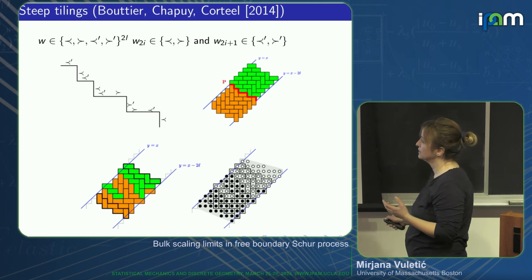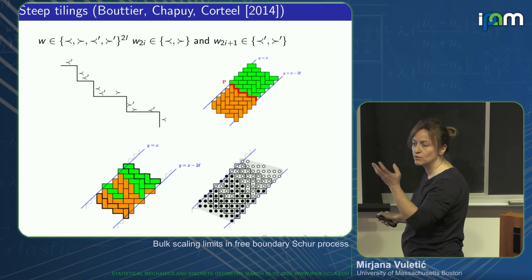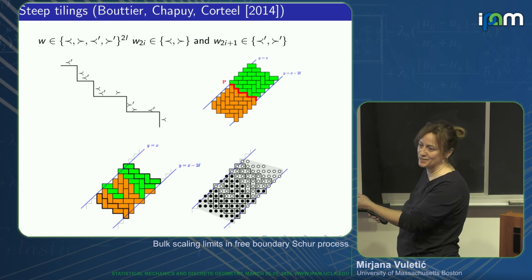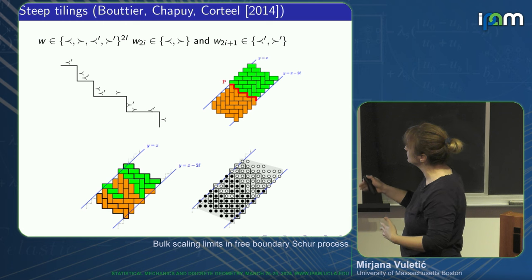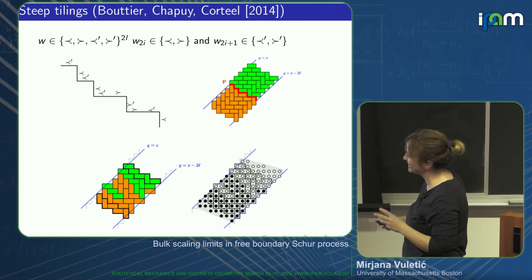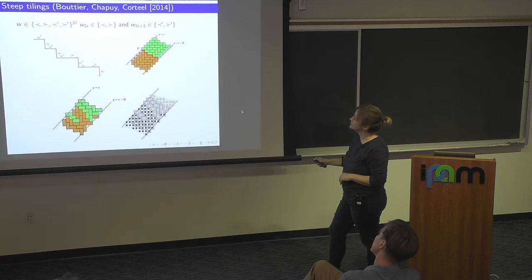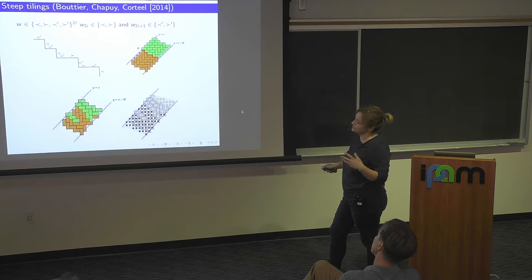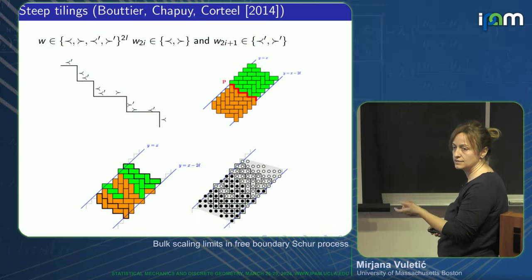When we have a boundary defined by the word, we can construct shapes like what Thomas showed — a herringbone pattern. For the Aztec diamond it's a regular zigzag, while for steep tilings you can have asymmetric herringbone with longer and shorter segments. Different tilings of this strip correspond to these interlacing sequences of partitions.